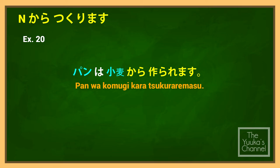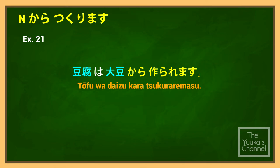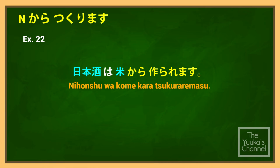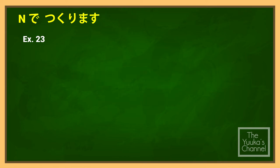Pan wa komugi kara tsukuraremasu — Bread is made from wheat. Toufu wa daizu kara tsukuraremasu — Tofu is made from soybeans. Nihonshu wa kome kara tsukuraremasu — Japanese sake is made from rice. Sake wa kome de tsukuraremasu. Onigiri wa kome de tsukuraremasu — Rice balls are made with rice.